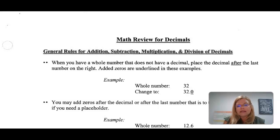When you have a whole number that does not have a decimal, you need to place the decimal after the last number on the right. Added zeros are underlined in these examples so that you know where the decimal is. This is where it can get very dangerous with dosage calculation because the difference of a decimal means a large difference in the calculation for the medication.